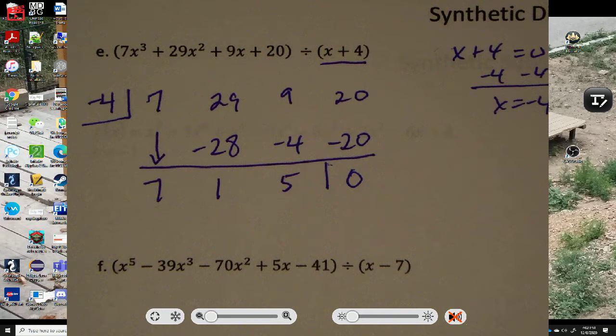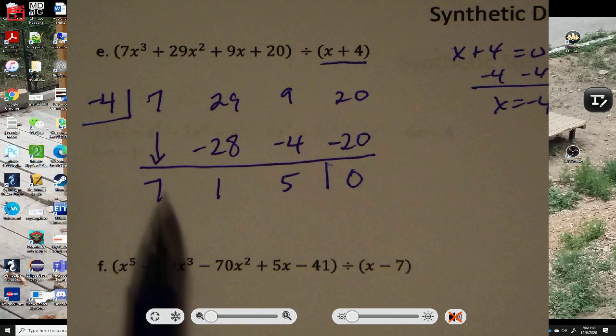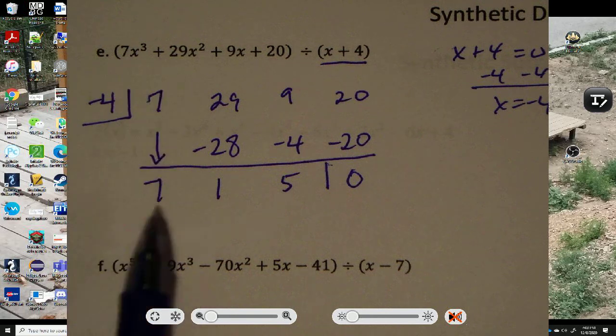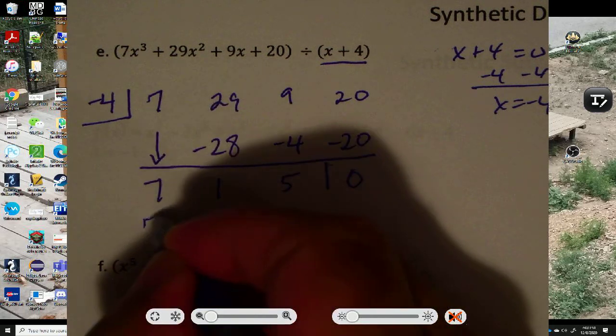Now, so what is the answer? Remember, we're dividing. If you remember the first group of division, what we're going to do, look at the exponent up here. It's x cubed. And the answer is going to have one less exponent. So it's going to be 7x squared. And then each one, the exponent is going to go down each time.